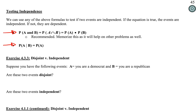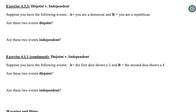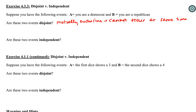Events here are Democrat and Republican. First question: are these events disjoint? Disjoint means mutually exclusive — they cannot occur at the same time — meaning the probability of A and B equals zero. Can somebody be a Democrat and a Republican? Can a randomly selected person be both? The answer is no. So these events are disjoint.